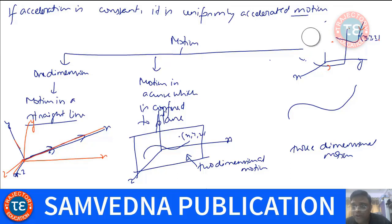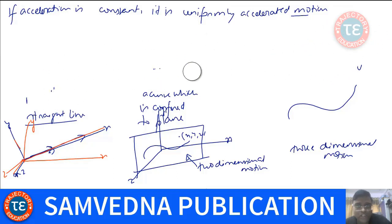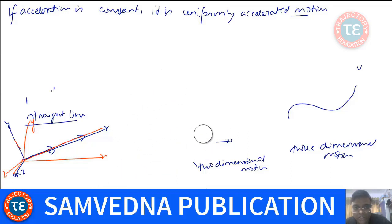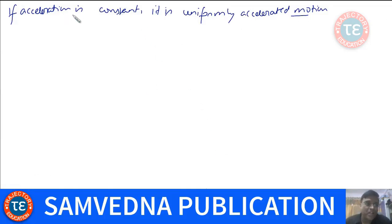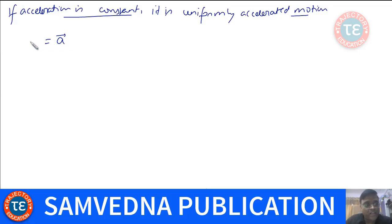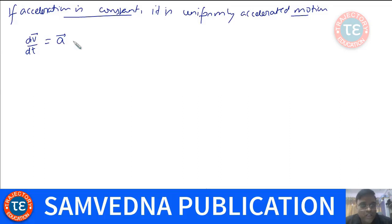That is something we will require quite often. Let's come back to what is called uniformly accelerated motion. When the body is undergoing uniform acceleration — that means acceleration remaining constant with time — we call it uniform acceleration, and the motion is called uniformly accelerated motion. So if A remains constant with time, A = dv/dt is constant. Acceleration is a vector quantity, and when a vector quantity is constant, its magnitude and direction both remain constant.